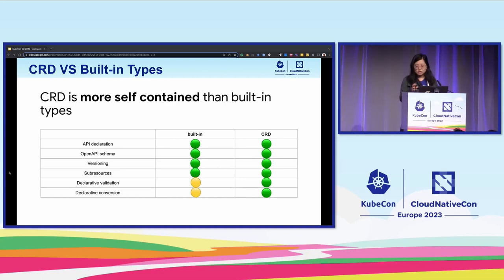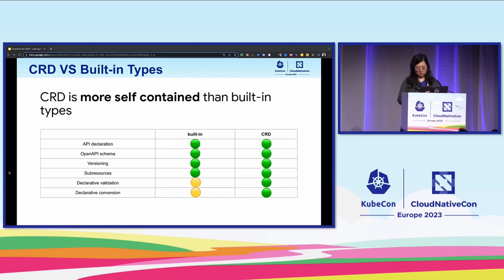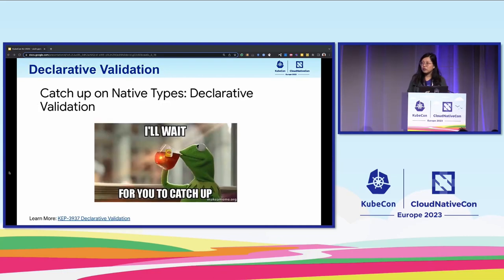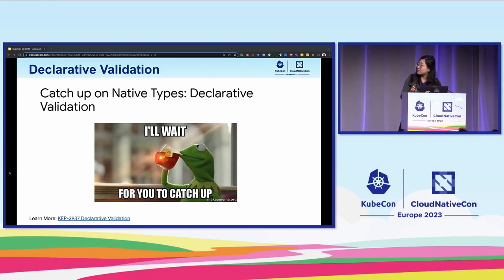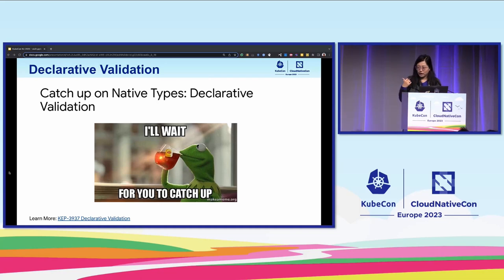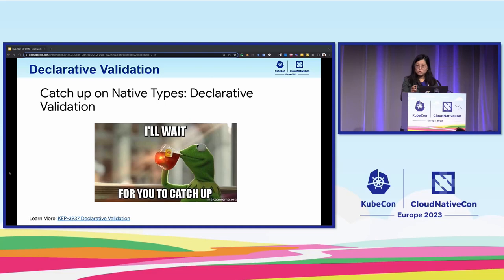After declarative validation and conversion with CEL are in place for CRD, CRD will become even more self-contained than native types. So what are we going to do next? We plan to catch up on native types with declarative validations. There's an open draft KEP against 1.28 already — please feel free to join the discussion. Since CRD also embeds native types, like the pod template, we believe declarative validation on native types will also benefit CRD.